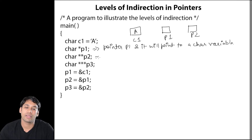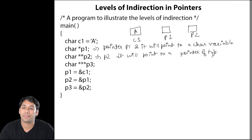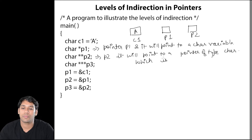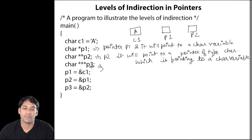Then in the next statement, we are having a pointer P2. It will point to a pointer of type character which is pointing to a character variable. In the third case, we are having triple star P3. That means P3 is a pointer of type character which will point to a character pointer, and that character pointer is again pointing to a character variable.